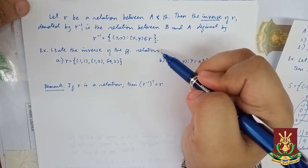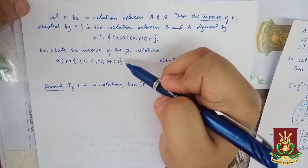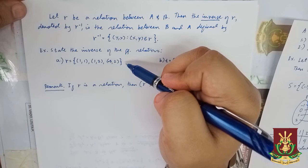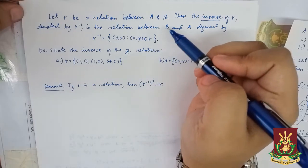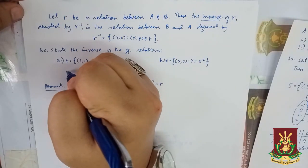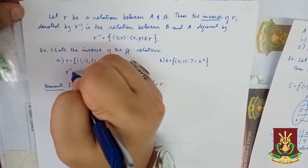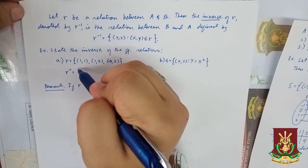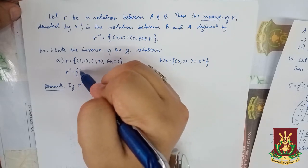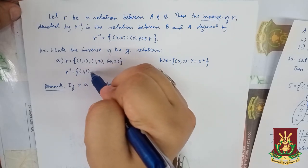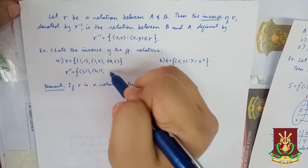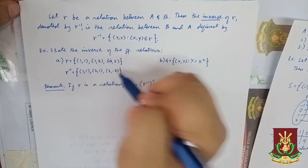Suppose you are asked to state the inverse of the following relations. We have R equals the set containing {(1, 1), (1, 2), (-3, 2)}. By definition, in order to find the inverse of R, denoted by R to the negative 1, we only need to interchange the roles of X and Y. That is, R inverse equals the set containing {(1, 1), (2, 1), (2, -3)}.